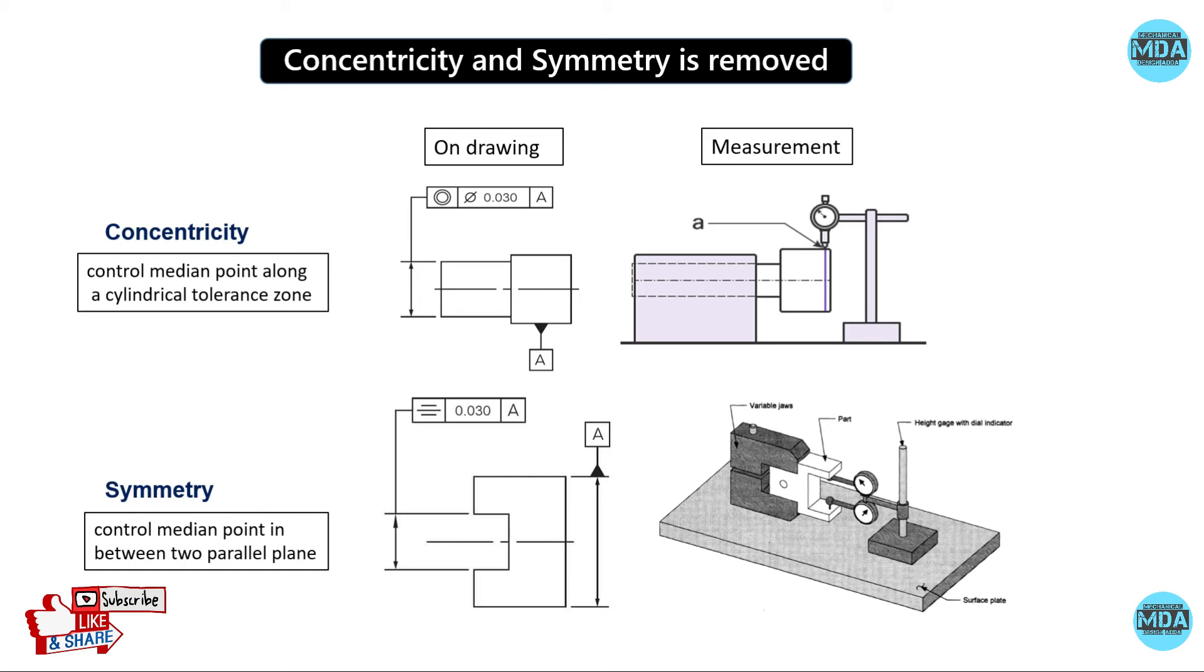Removing concentricity and symmetricity does not mean we are compromising with coaxial and symmetric features. It helps eliminate the confusion and misapplication of concentricity and symmetricity. Instead, we can use positioning to control coaxial and symmetric features. This provides direct control to the feature.